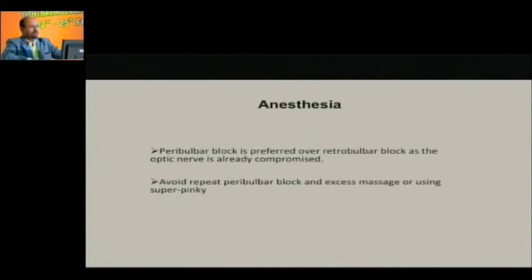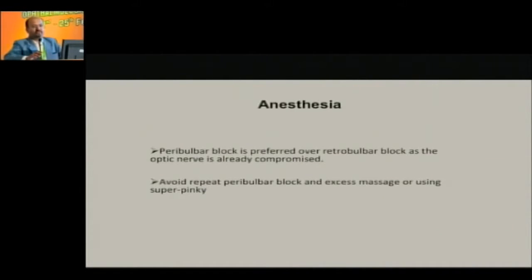For anesthesia, peribulbar block is usually preferred over retrobulbar block, but nowadays in our institute we have started giving subconjunctival anesthesia. For theoretical purposes, general anesthesia is the best for trabeculectomy because you don't go anywhere near the conjunctiva with a needle before you even start the surgery.